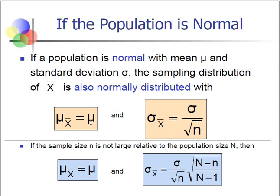The sampling distribution is normally distributed with a mean of mu. That means the mean of the sample means will equal the population mean mu. The standard error — which is the standard deviation of the sample means — is equal to the standard deviation of the population divided by the square root of the sample size.